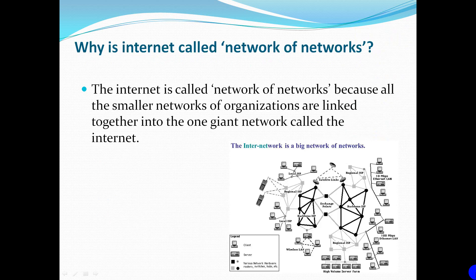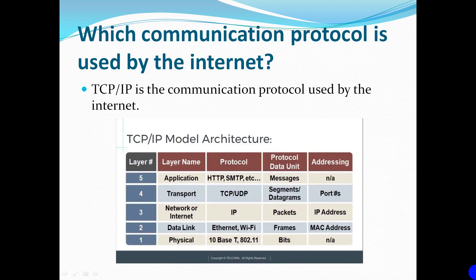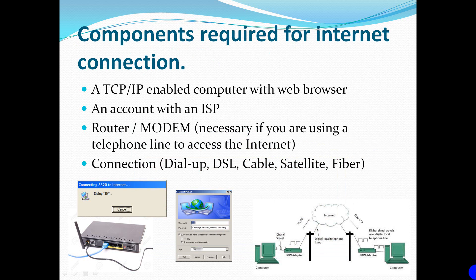The Internet is called the network of networks because all the smaller networks of organizations are linked together into one giant network called the Internet. The protocol used by the Internet is TCP/IP. The components required for Internet connections are: a TCP/IP enabled computer with a web browser, an account with an ISP, and a router or modem, necessary if you are using a telephone line to access the Internet.